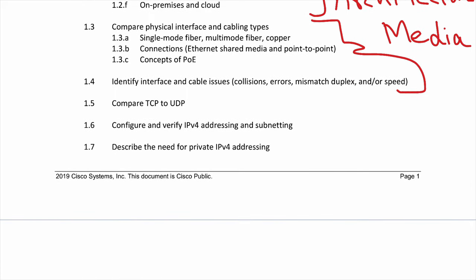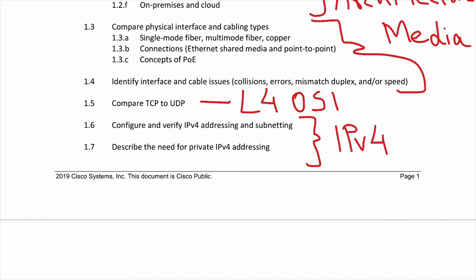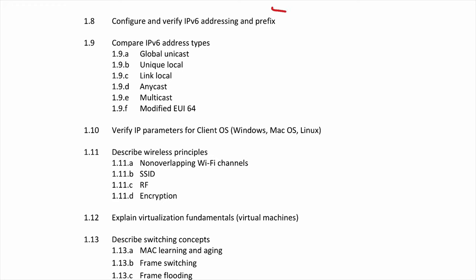Section 1.5 covers Layer 4 of the OSI model — I'll cover OSI in detail so you'll get to learn about that thoroughly. Sections 1.6 and 1.7 are about IPv4 addressing, and I will go into an excruciating amount of detail on IPv4. We'll then get into IPv6, which is a big topic and becoming very relevant because we're running out of publicly available IPv4 addresses.